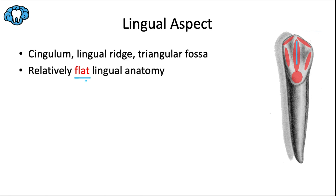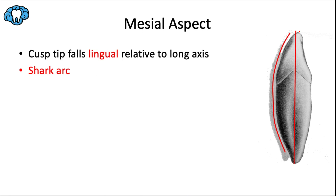The cusp tip falls lingual relative to the long axis — a common feature of all anterior mandibular teeth — differentiating it from the maxillary canine where the cusp tip fell facial relative to the long axis. Another distinguishing feature is what we call the 'shark arc': a continuous convex facial surface from crown to root. There's also a deep root flute on this tooth, but the root is already pretty skinny, which I'll explain more when we discuss the root specifically.